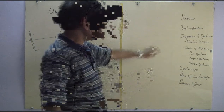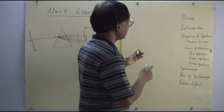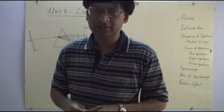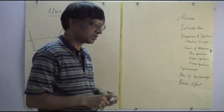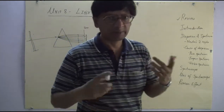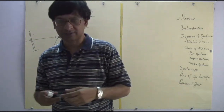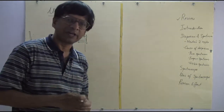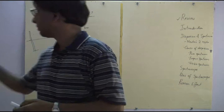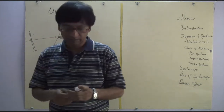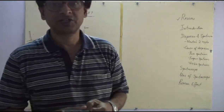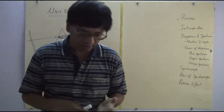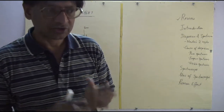Let us recapitulate what we have learnt about light in the previous sessions. The first thing we know is that light is a form of energy. In Unit 7 we said that heat is a form of energy; light is also another form of energy. So light is a form of energy and light also travels in straight lines.